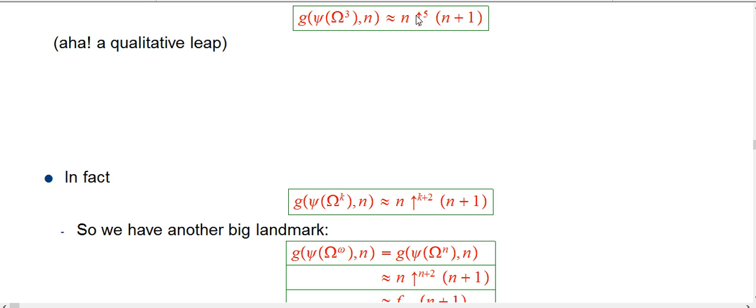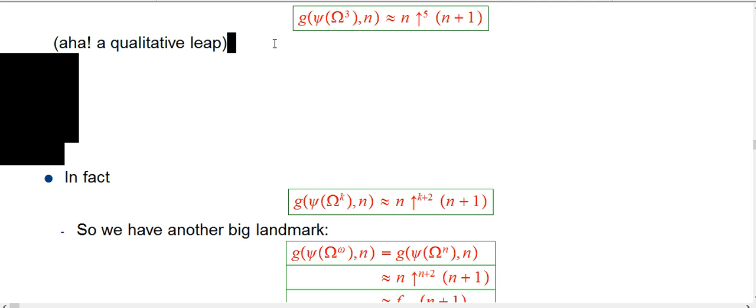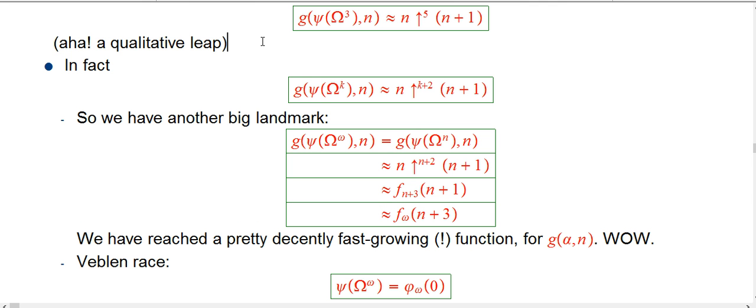Okay, so omega cubed, we're getting n, 5 up arrows, n plus 1. You can see the pattern. I'm not going to worry too much in this one about any kind of careful argument, but show you the patterns. If you have any finite number, we're going to get n and then k plus 2 up arrows of n plus 1.